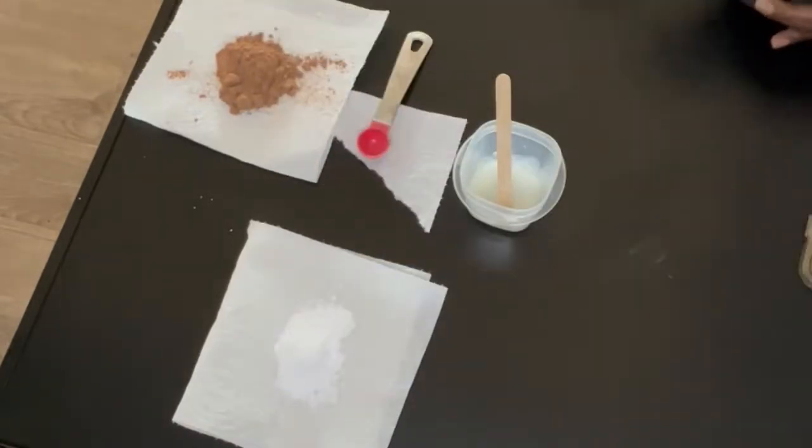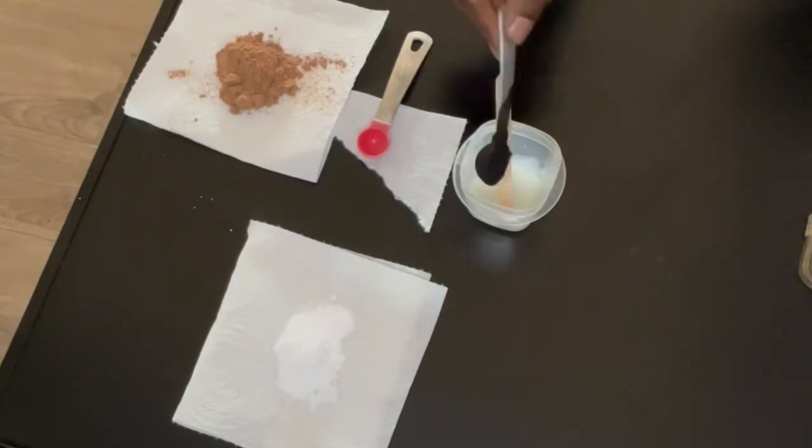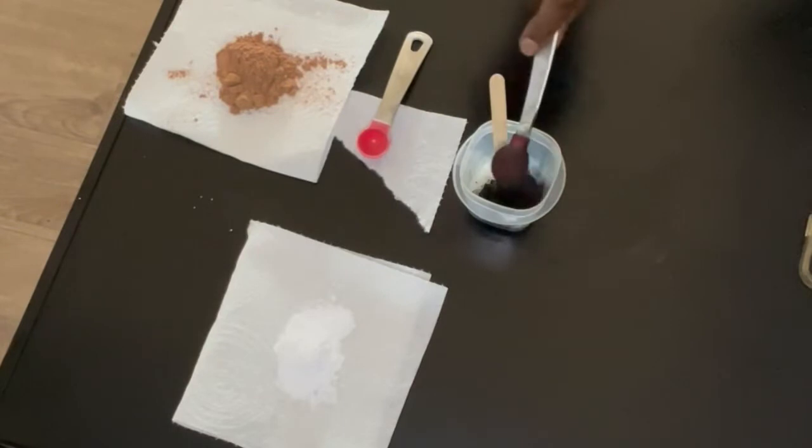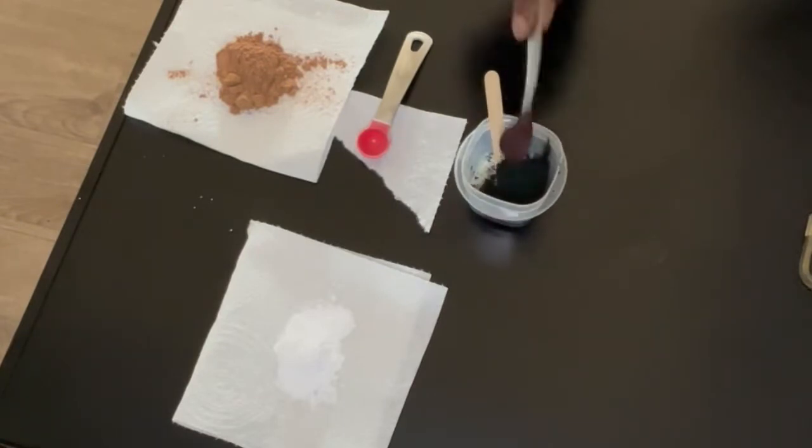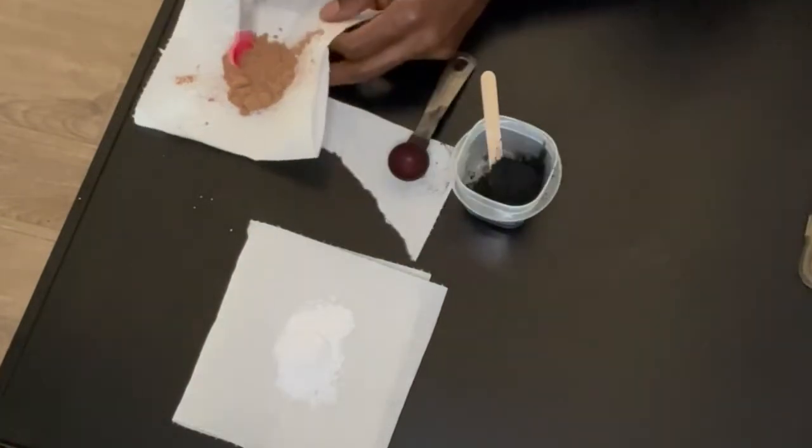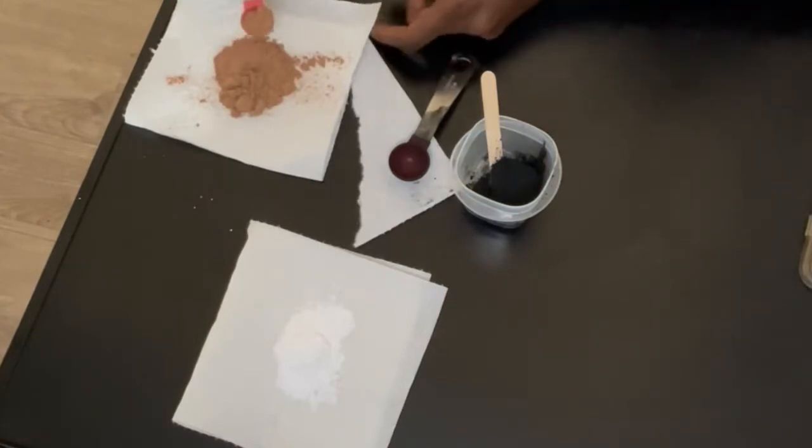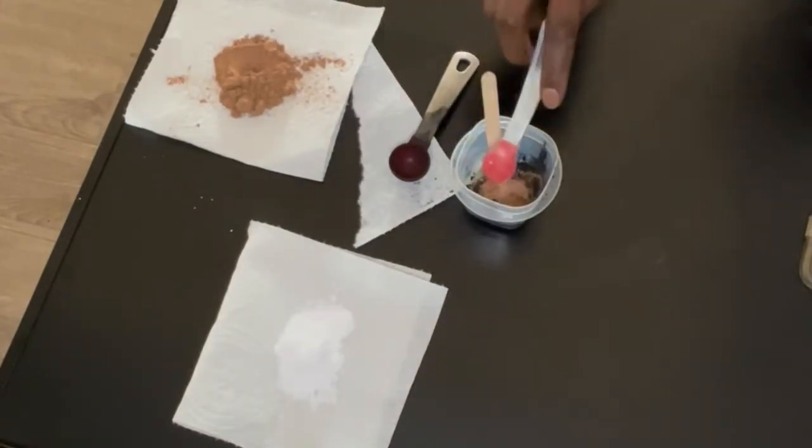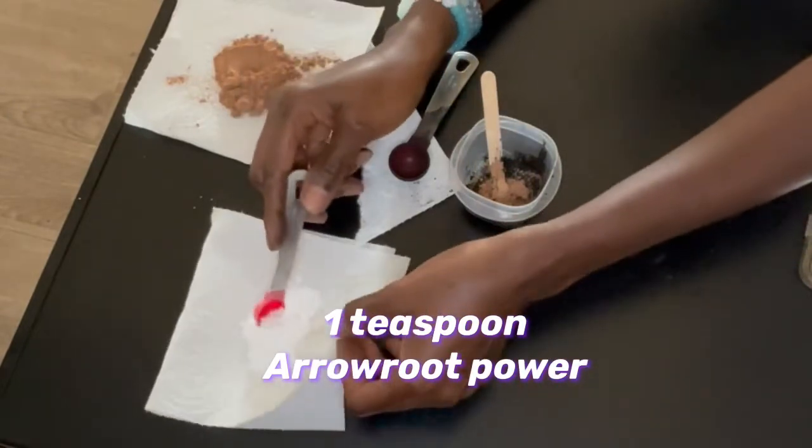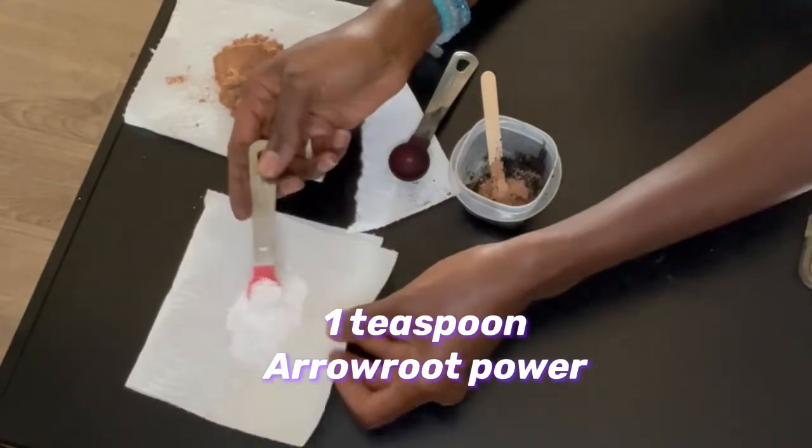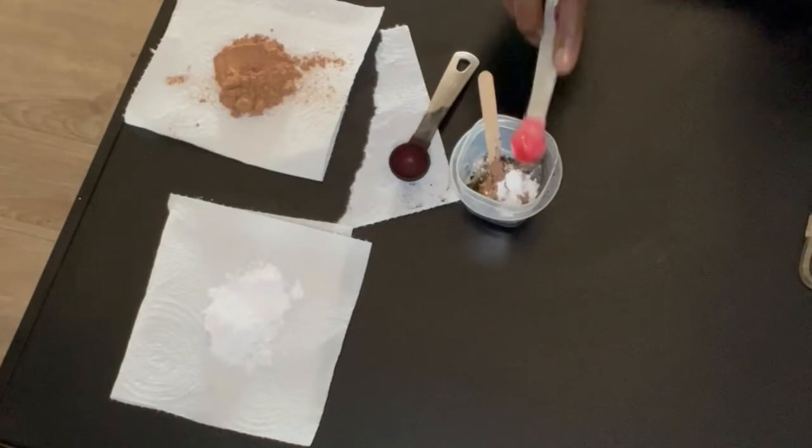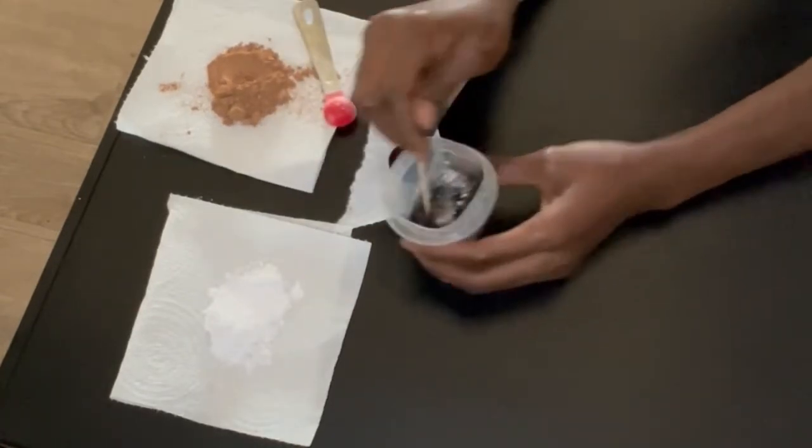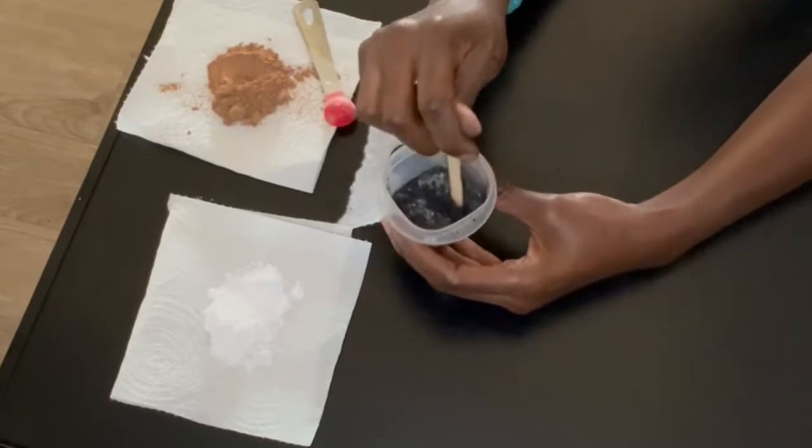Now I'm going to add two tablespoons of activated charcoal, one teaspoon of cacao powder, and one teaspoon of arrowroot powder—that's teaspoon, not tablespoon. Now that all the ingredients are in this bowl, I'm going to mix it all together.